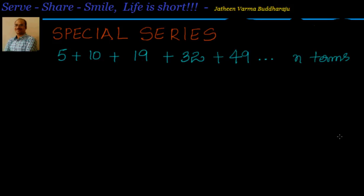Hello, welcome back. We are going through a special series as part of sequences and series. Let's look at this series — we have to find out the sum of 5 plus 10 plus 19 plus 32 plus 49. You can see very clearly this series is not in any standard progression; that means it's not in any arithmetic progression, geometric progression, or harmonic progression. But how do we find out the sum of this particular series?